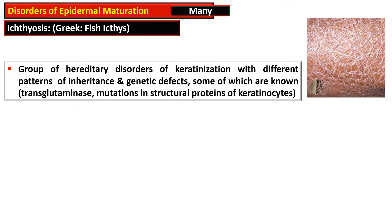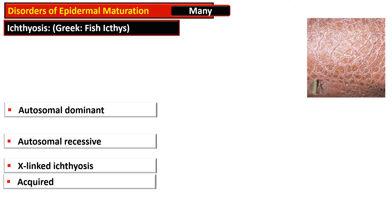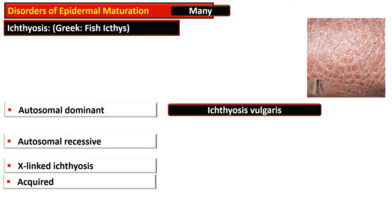One example of a known genetic defect is transglutaminase — a mutation in this structural protein of keratinocytes results in ichthyosis. Ichthyosis is inherited by autosomal dominant, autosomal recessive, or X-linked patterns, and there is also one acquired variety.